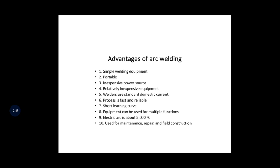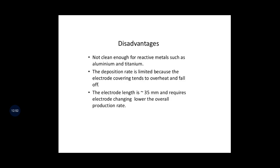Disadvantages: arc welding is not clean enough for reactive metals such as aluminium and titanium. The deposition rate is limited because the electrode covering tends to overheat and fall off. The electrode length is approximately 35 mm and requires frequent electrode changing, lowering the overall production rate. Some welding defects such as blow holes and cracks will occur. Weld times are rather slow since consumable electrodes must be frequently replaced.